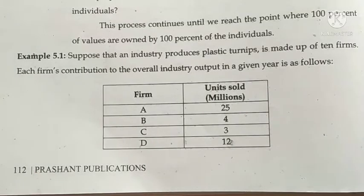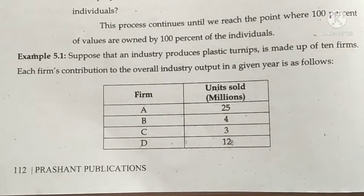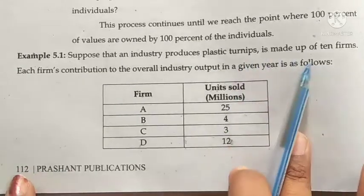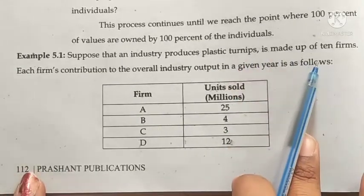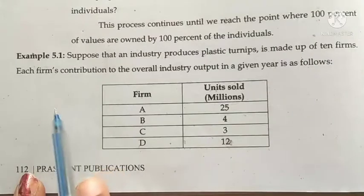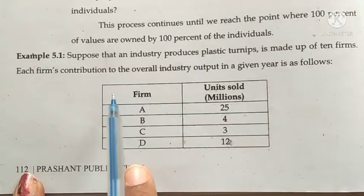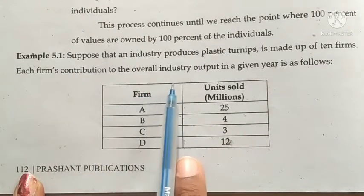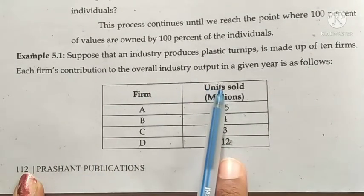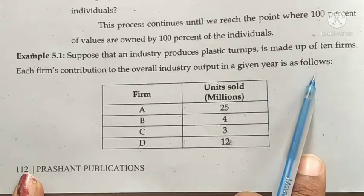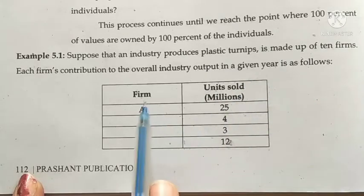Now let us look at an example for the Lorenz Curve. Suppose that an industry producing plastic items is made up of 10 firms. Each firm's contribution to the overall industry output in a given year is as follows.